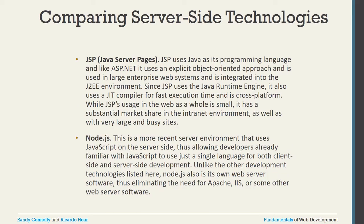Another is JSP — Java Server Pages. JSP uses the Java programming language. Like ASP.NET, it uses an explicit object-oriented approach and is used in large enterprise web systems, integrated into the J2EE environment. JSP uses the Java Runtime Engine (JRE) and also uses a JIT compiler — Java Just-In-Time compiler — for fast running. It is cross-platform. While JSP's overall web usage is small, in the enterprise and large busy sites segment, it is very large.